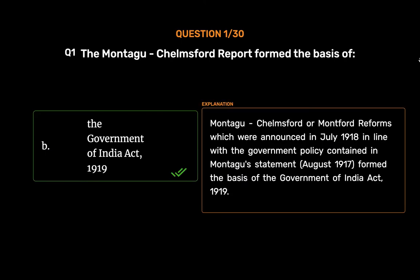The Montague-Chelmsford or Montford reforms, which were announced in July 1918 in line with the government policy contained in Montague's statement of August 1917, formed the basis of the Government of India Act, 1919.